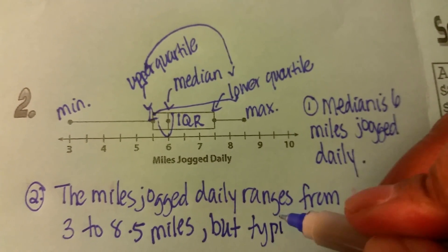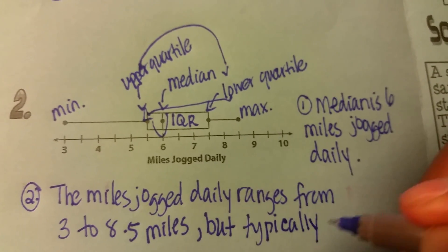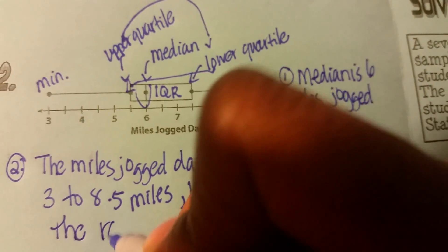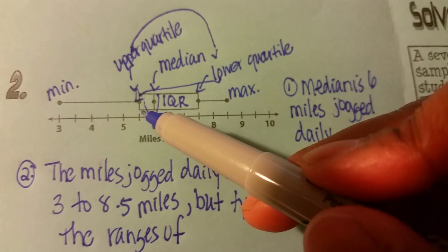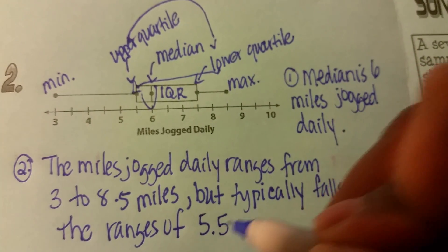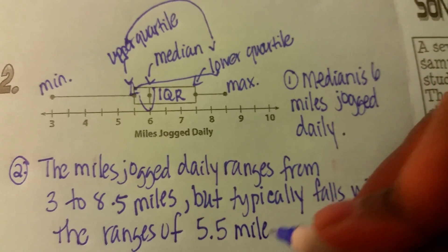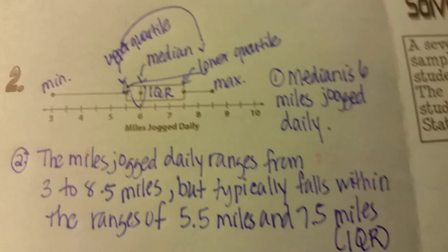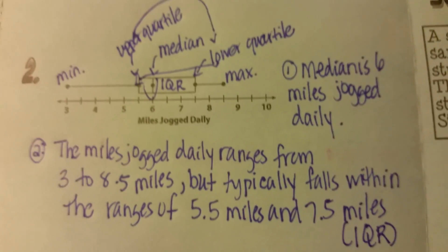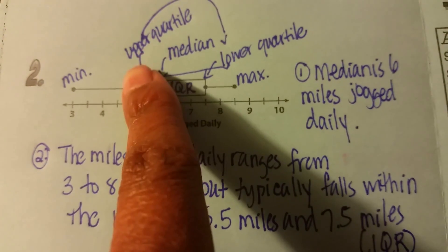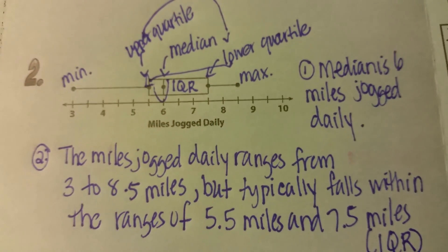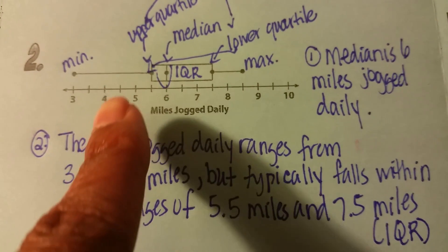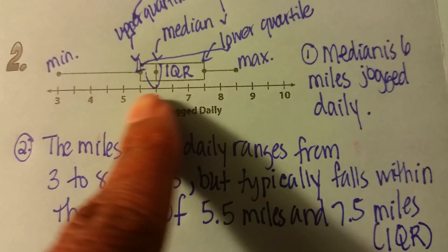But typically the data falls within the interquartile range, which is 5.5 to 7.5 miles — that's my IQR or interquartile range. Again, I'm sorry for mixing up the quartile labels earlier. To summarize: the median is 6, the miles jogged daily ranges from 3 to 8.5, and typically most of the data falls between 5.5 and 7.5.